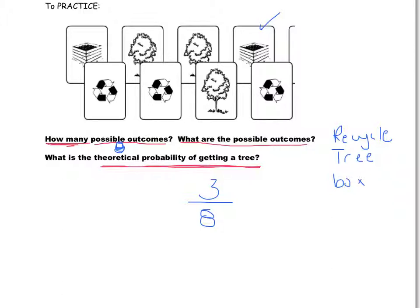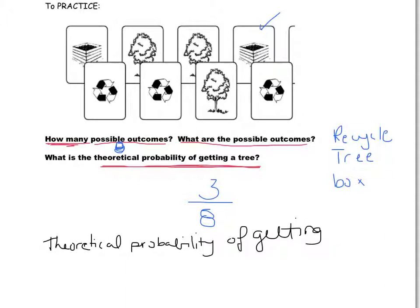Now try the theoretical probability of getting a box. Our total is still 8. There are only 2 boxes, so the theoretical probability of getting a box is 2 out of 8. So if my winning card were a tree or a box, I'd prefer the tree because there are more of them. Again, we can use theoretical probability to determine whether an option is a good option, fairly possible, or not as likely.